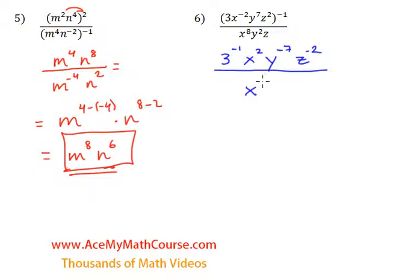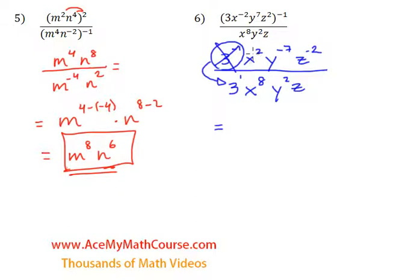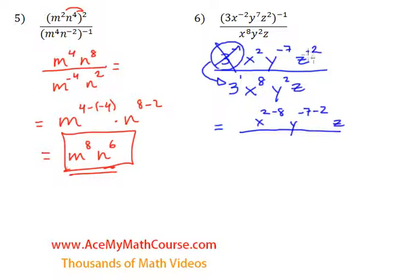Then z squared to the power of negative 1 is z to the power of negative 2, because 2 times negative 1 is negative 2. All over x to the power of 8, y squared, z. Now 3 to the negative 1 — I can bring it down and make the exponent positive, so I have 3 to the power of positive 1, and the 3 is no longer in the numerator. Now I will combine the variables: x squared over x to the 8 is x to the power of 2 minus 8. Y to the power of negative 7 over y squared is y to the power of negative 7 minus 2. And finally for z, I have z to the power of negative 2 and we subtract the hidden exponent of 1. All over 3.